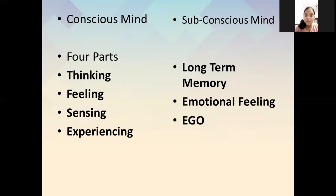The subconscious mind consists of long-term memory, emotional feelings, ego, and superego. These are types of the subconscious mind and they last for a long time. The ego can further convert into anger, and the superego into revenge, which can ultimately lead to some form of battle or conflict.